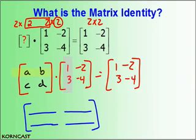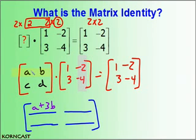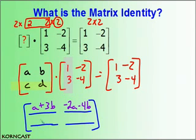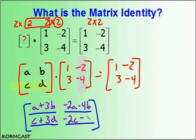Row 1 times column 1 gives row 1, column 1: A times 1 is A, plus B times 3 is 3B, so we get A plus 3B. Row 1 times column 2: A times negative 2 is negative 2A, plus B times negative 4 is negative 4B. Row 2 times column 1: C times 1 is C, plus D times 3 is 3D. And row 2, column 2: C times negative 2 is negative 2C, plus D times negative 4 is negative 4D. That 2 by 2 matrix is the result of this product and equals the other 2 by 2 matrix.